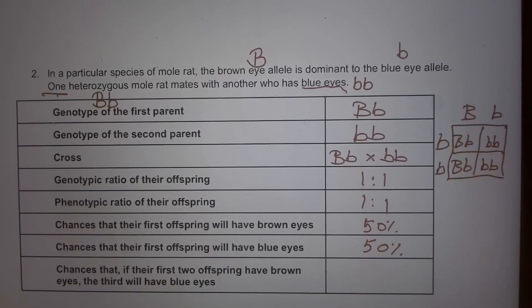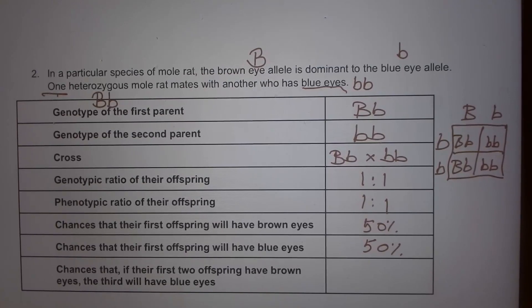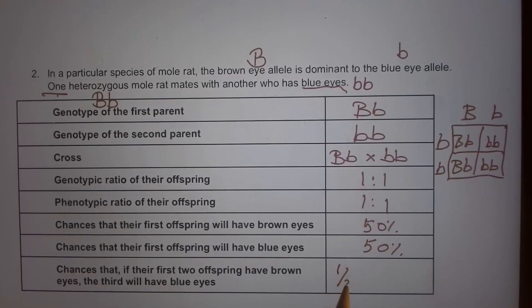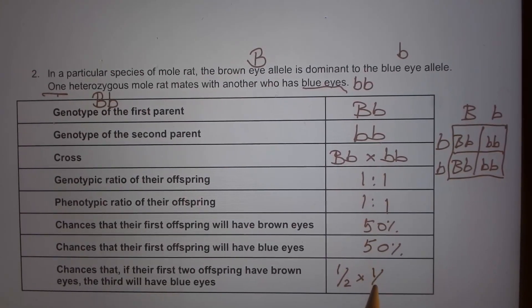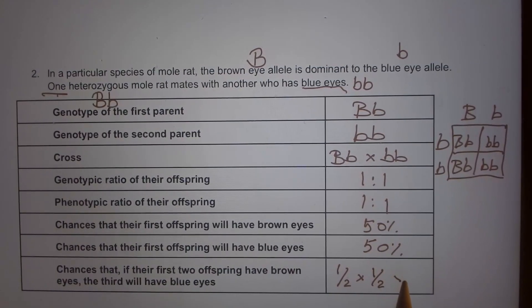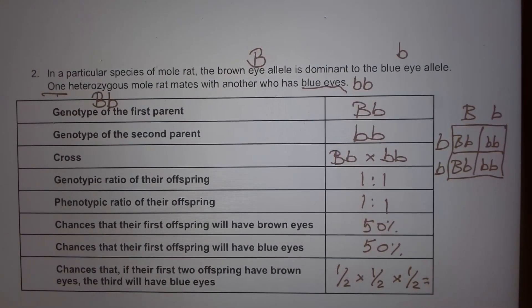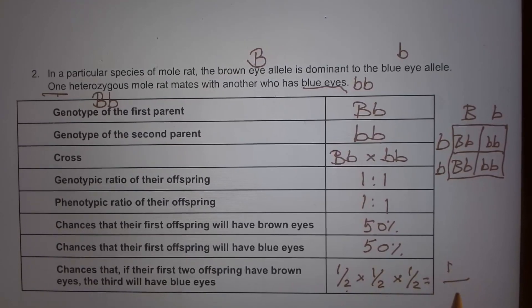There is also a question: what is the chance that the first two offspring have brown eyes and the third has blue eyes? Since these events are independent, we multiply: brown for the first is 1/2, brown for the second is also 1/2, and blue for the third is also 1/2. Multiplying together: 1/2 × 1/2 × 1/2 = one-eighth.